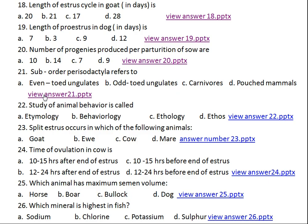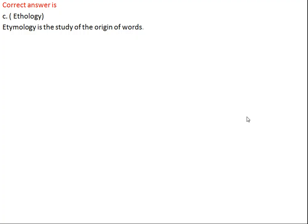Question number twenty-two: study of animal behavior is called what? Option A: etymology, Option B: behaviorology, Option C: ethology, Option D: ethos. The right answer is Option C, ethology. Etymology is the study of the origin of words, unrelated to biology, and behaviorology is not a recognized term.